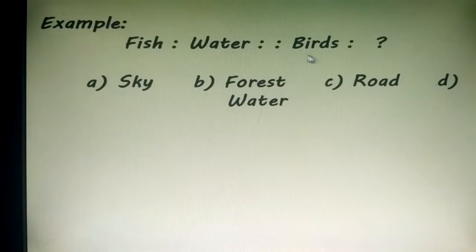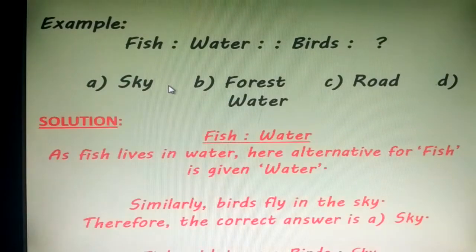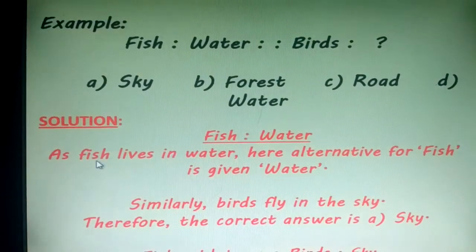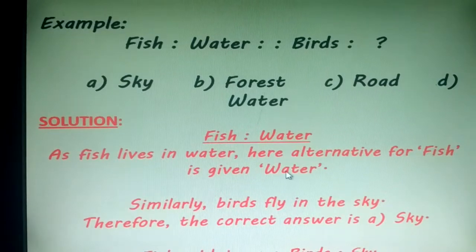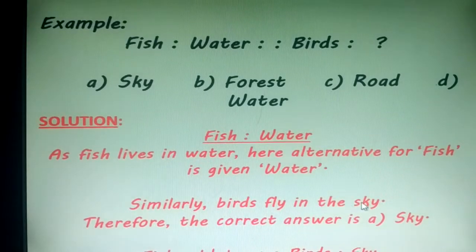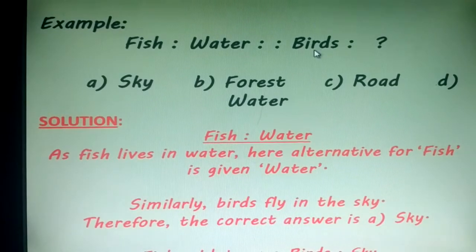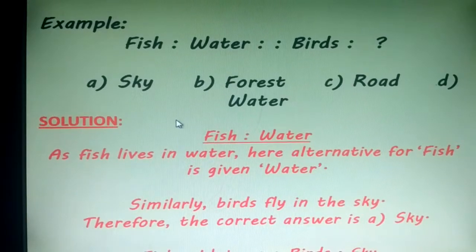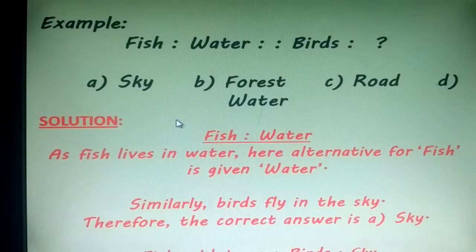Let's have the solution. Fish, water - as fish lives in water. Here, alternatives for fish. Similarly, birds fly in the sky. Therefore, the correct answer is A, sky. So we can say birds live in sky, or the habitat of birds is sky. Fish is related to water as for living. Similarly, birds are related to sky. Have you got that?